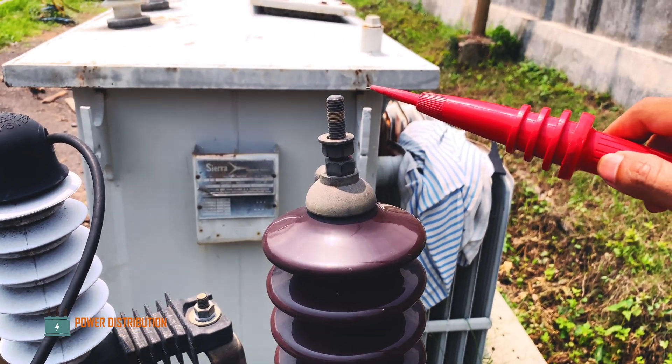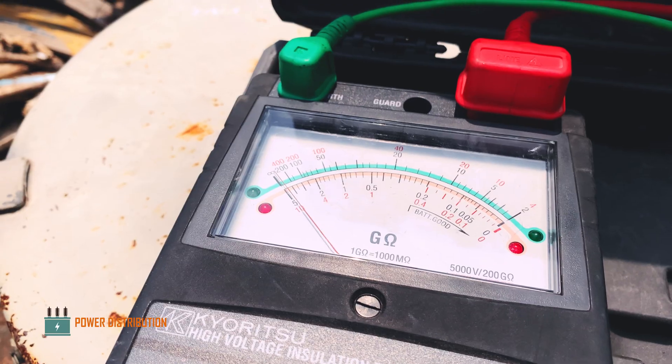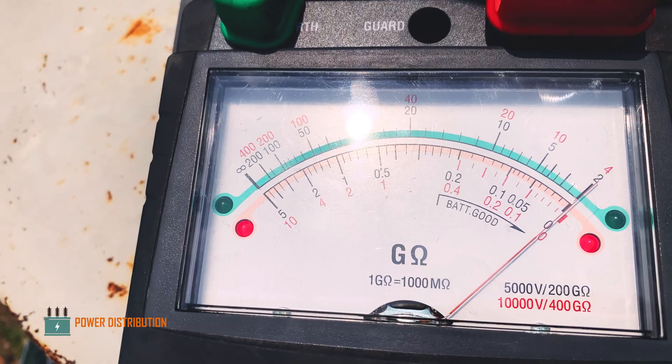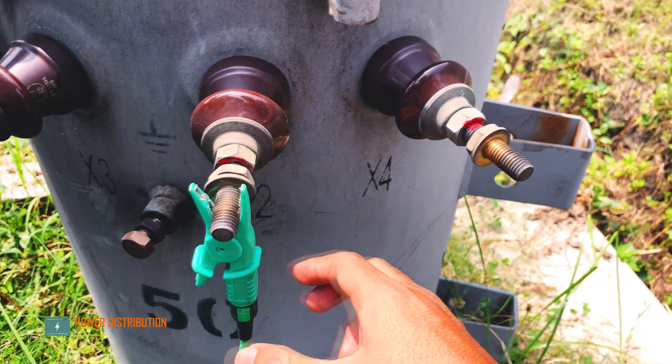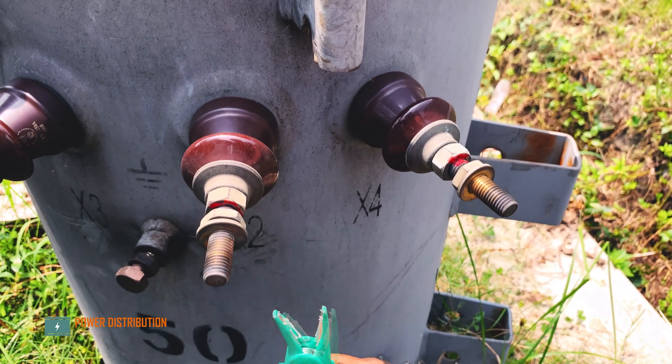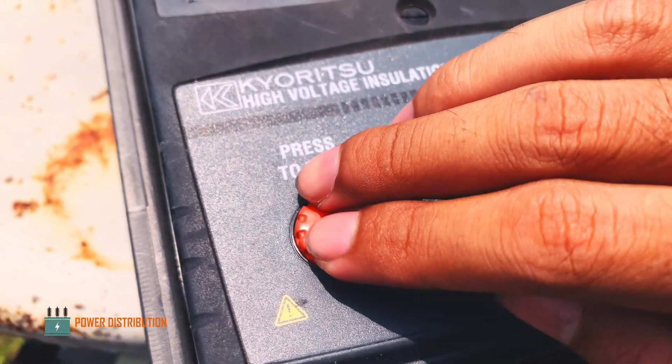Live probe on primary bushing, measure it for around one minute. We get a zero reading, which means a short circuit is happening inside the transformer. Next we measure the adjacent winding on the secondary terminal.